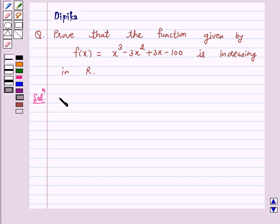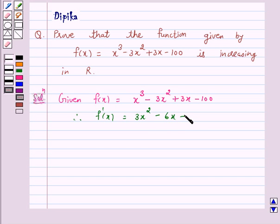Given f(x) = x³ - 3x² + 3x - 100. Therefore, f'(x) = 3x² - 6x + 3, and this is equal to—let us take 3 common—